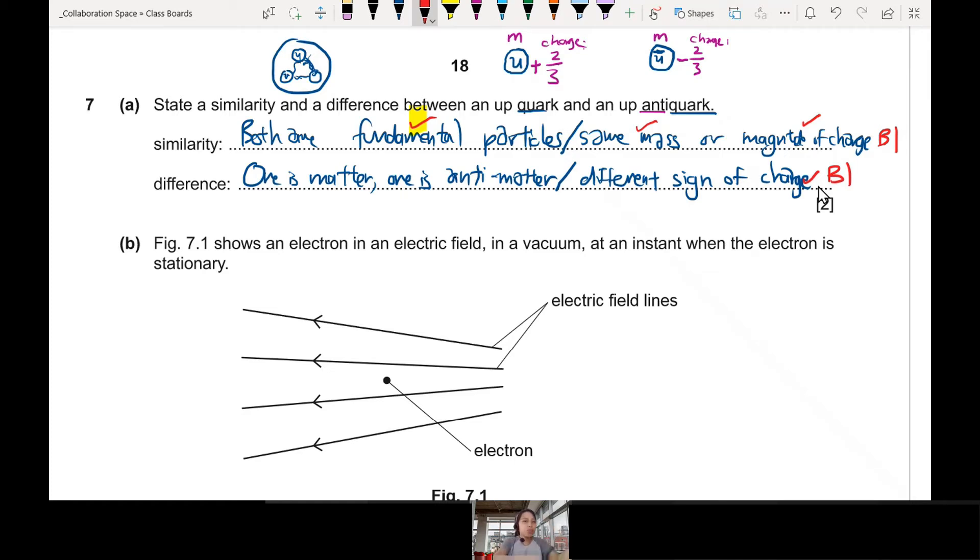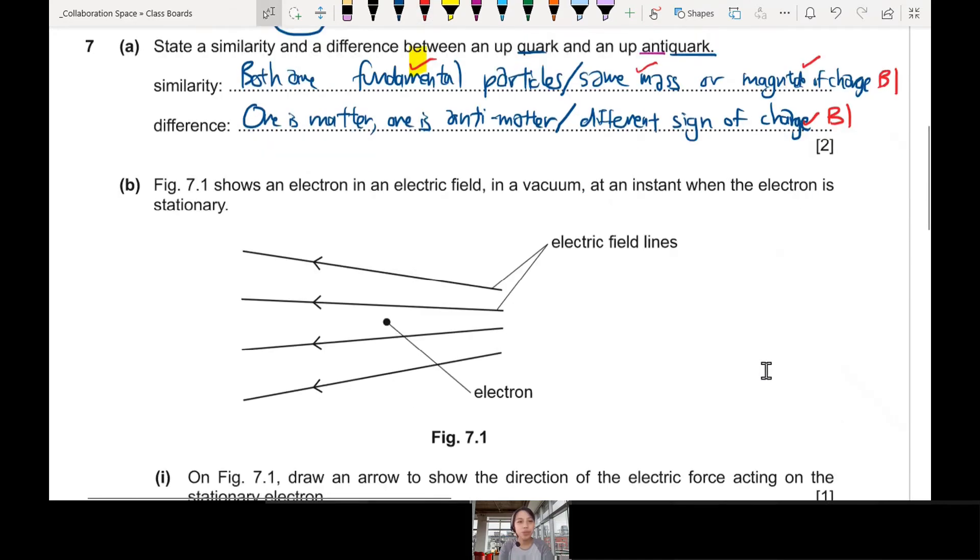Make sure you know what is your up quarks. What are quarks? What are down quarks? What are baryons, mesons? These are all from the particle physics chapter. Let's move on to the next part then.